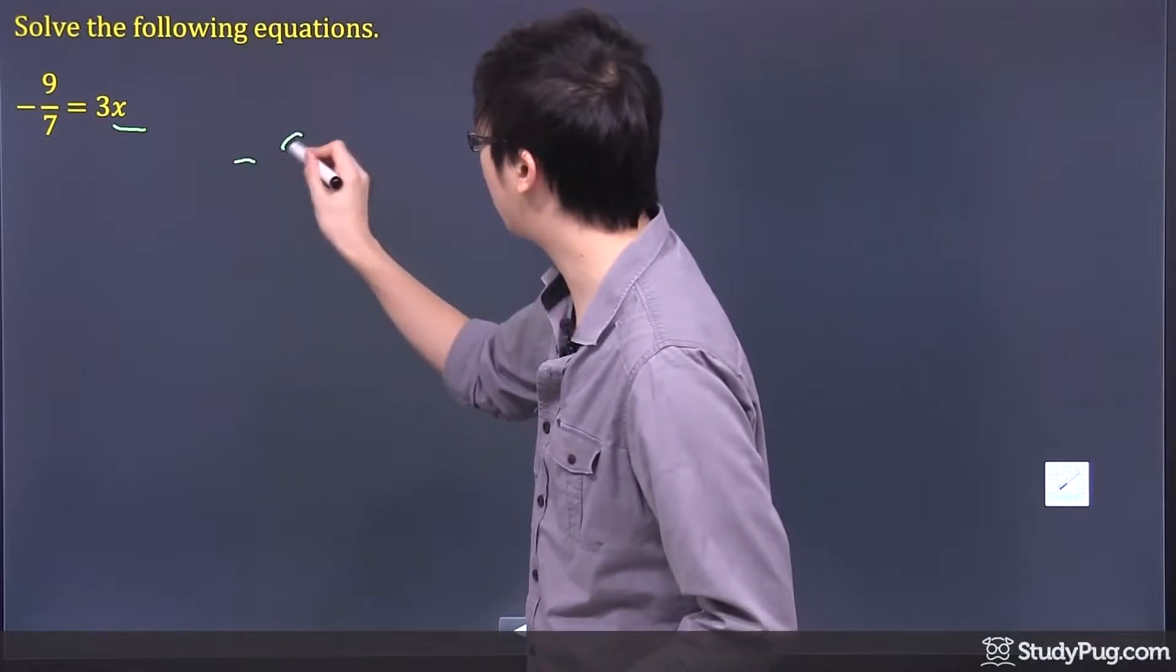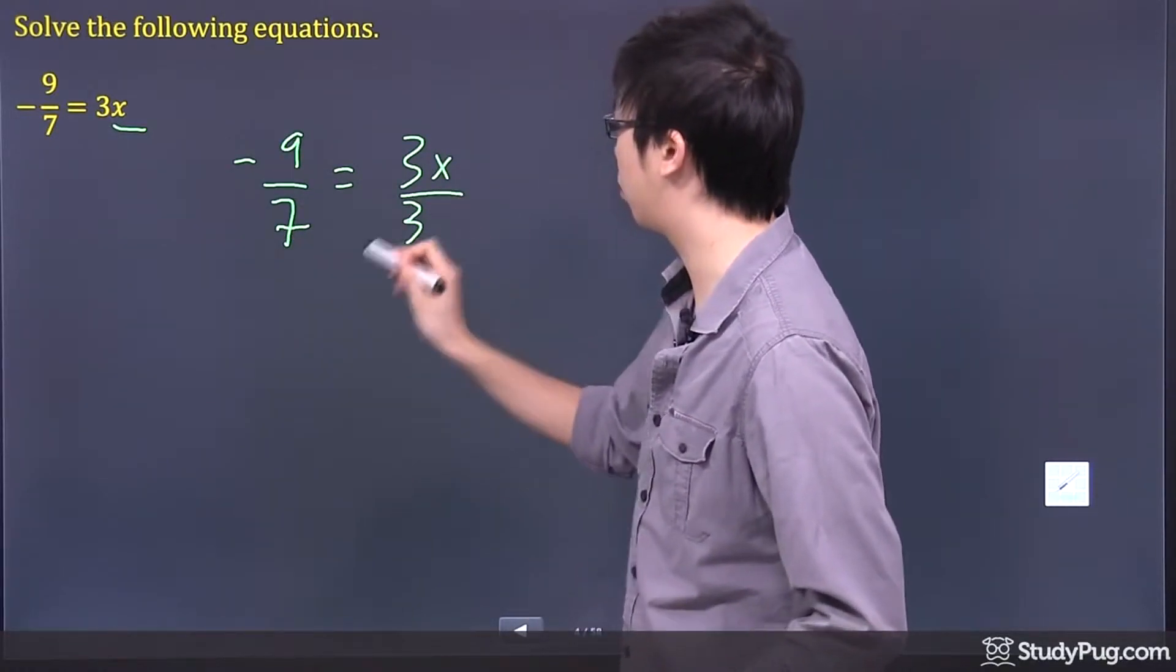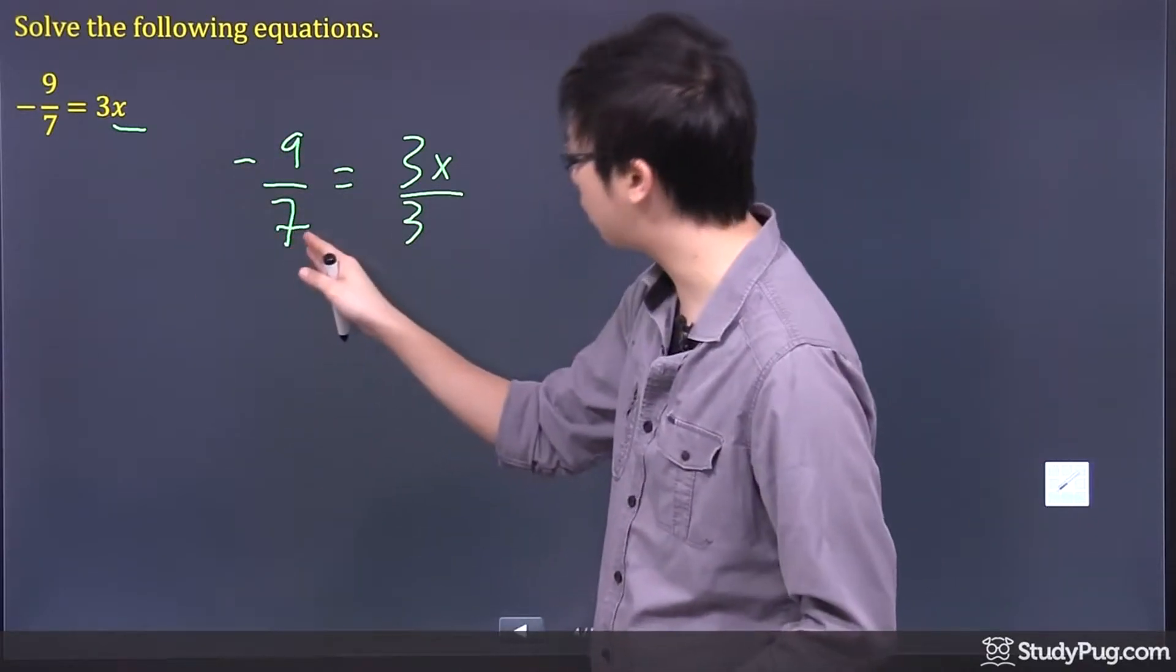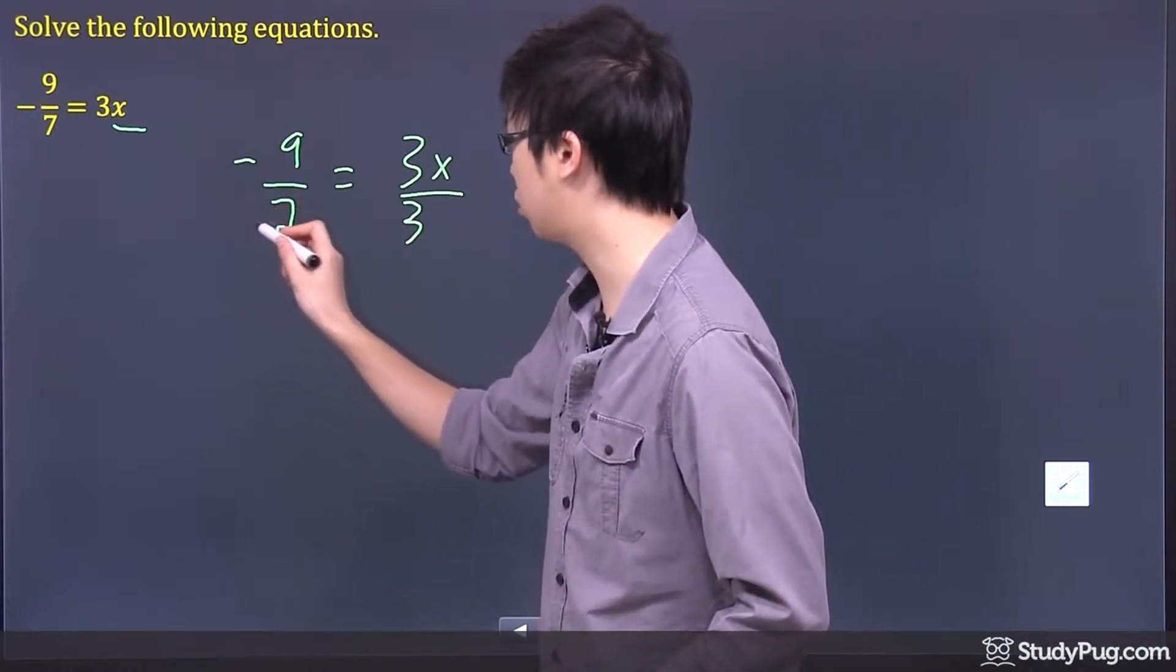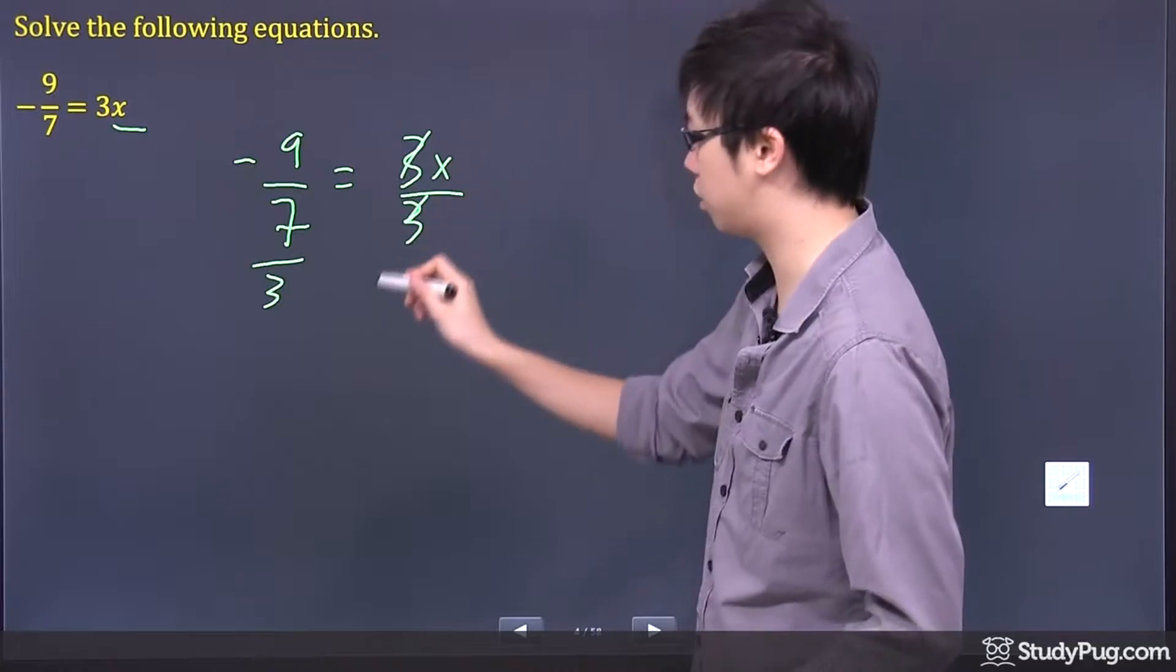So if I'm going to show you all the work here, which I would, then you would just simply divide 3 to both sides. So negative 9 over 7 right here, if you divide it by 3, you can actually just put divide by 3 here if you want. Now, this will cancel.